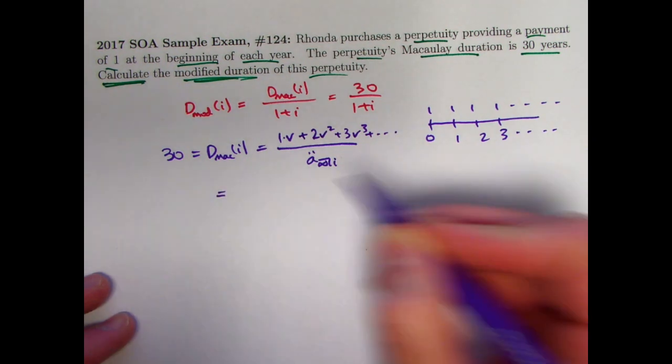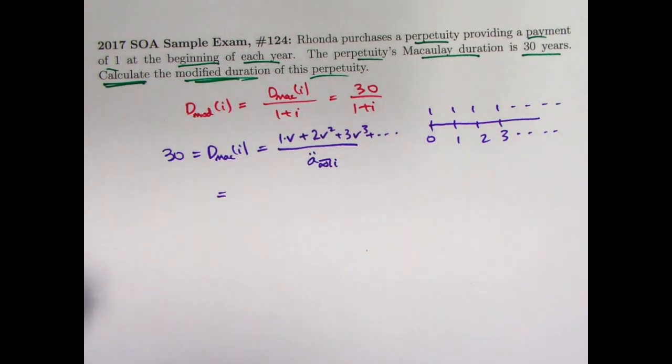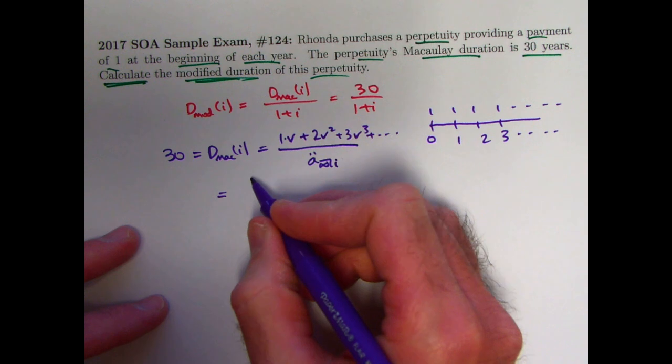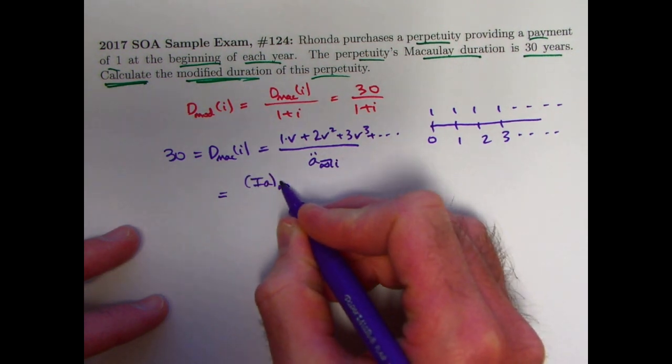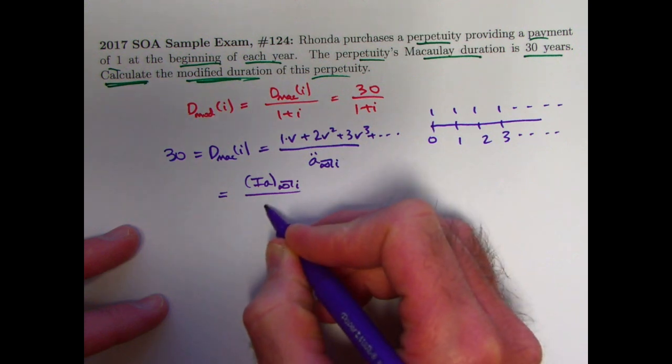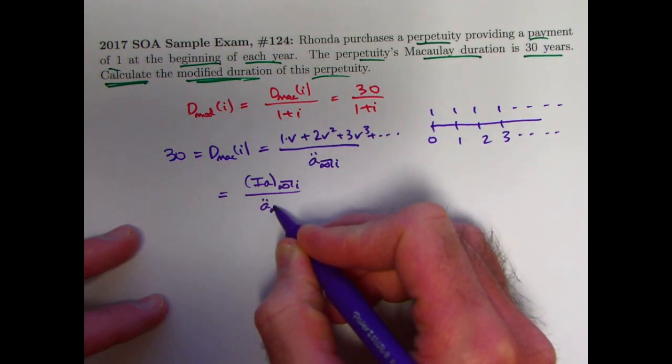And you should recognize that that is your basic present value of a basic annuity immediate, increasing annuity immediate, Ia infinity, divided by a double dot infinity is what we get here.